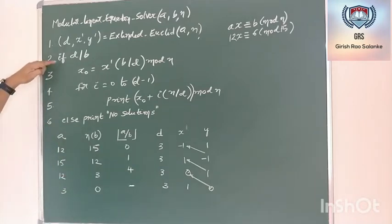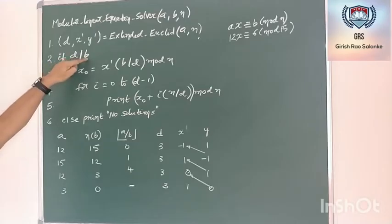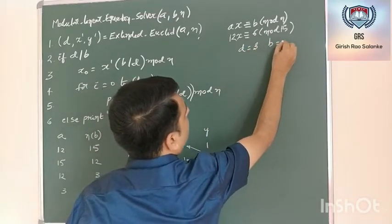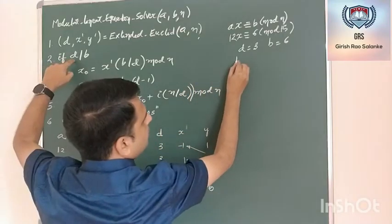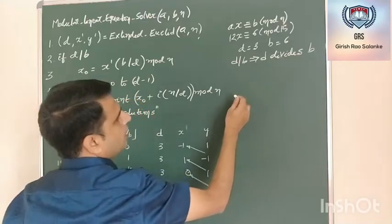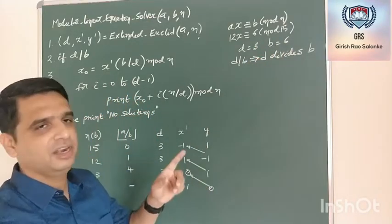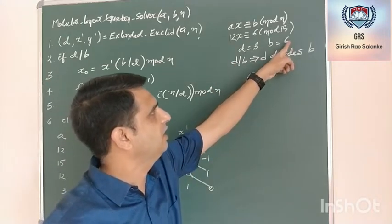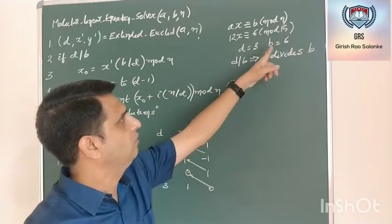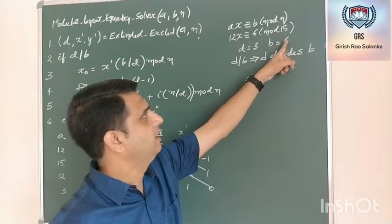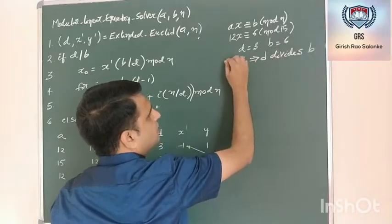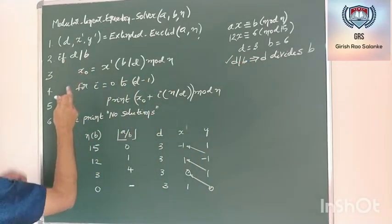Once this is done, I go to the next step. The next step states that if d divides b — d is 3 and b is 6 — is 6 divisible by 3? Yes, 6 divided by 3 is 2, so that condition is true. If b value were 8, then 3 does not divide 8, which would be false. Since b value is 6, the condition is true. If d divides b, I need to find the value of x naught. x naught is calculated as x dash times (b divided by d) mod n.